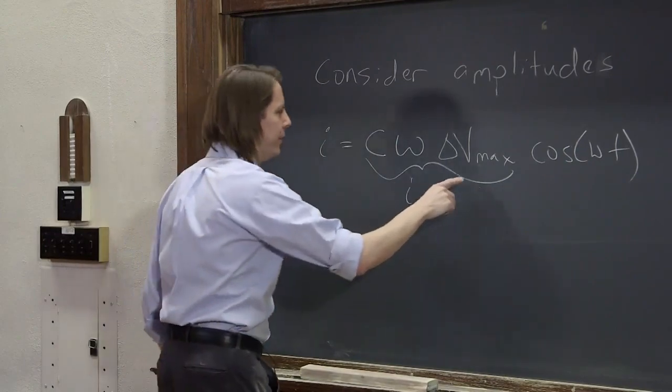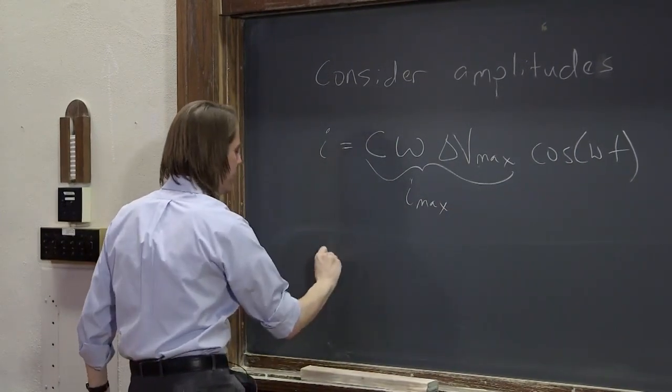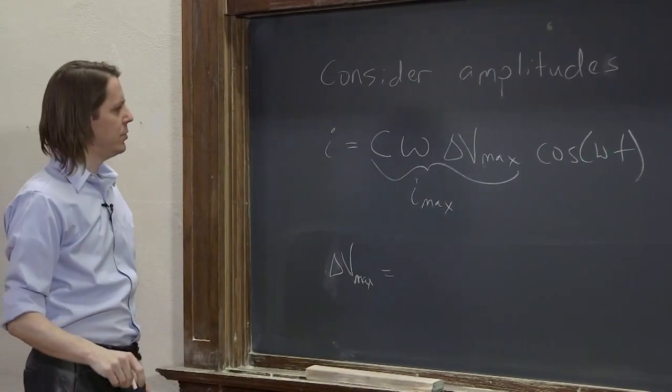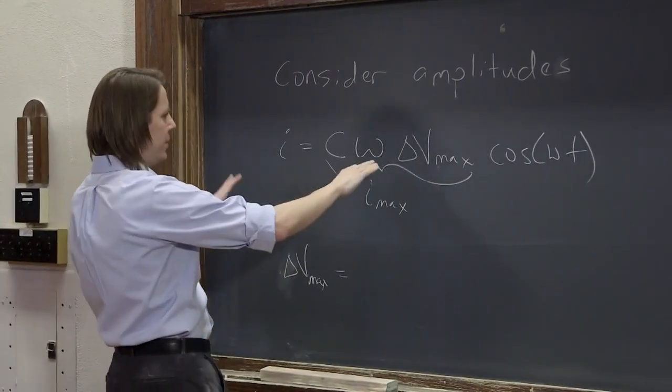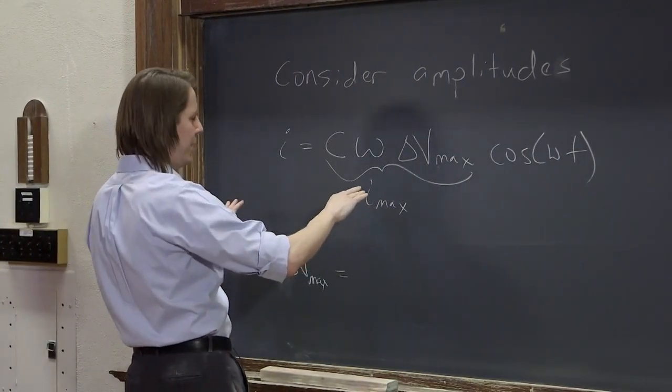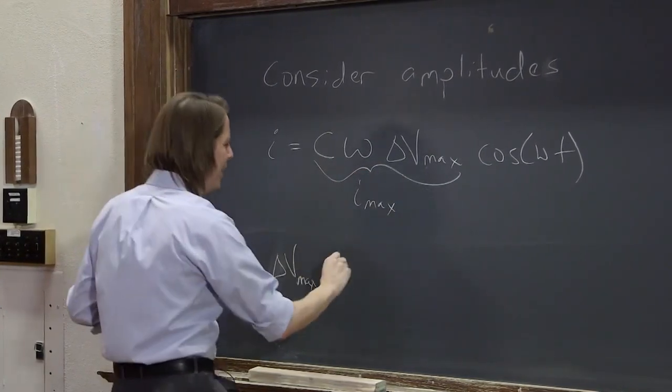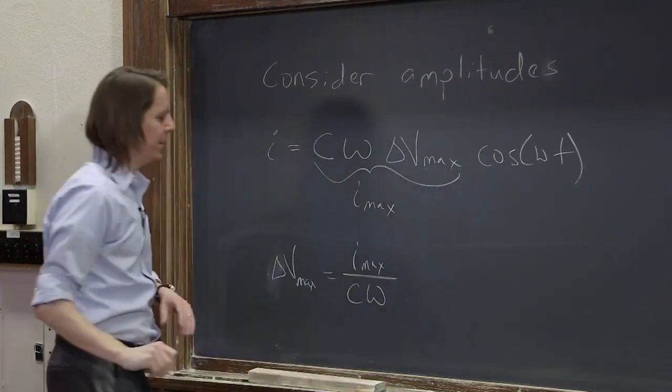So we could also write delta V max, the amplitude of the voltage that you apply equals—let's see, this would be equal to I max is this—so delta V max would be I max over C omega.